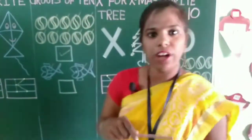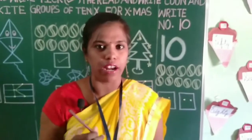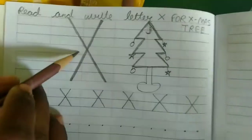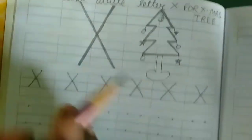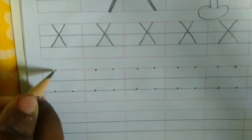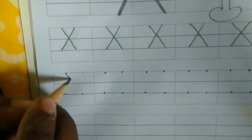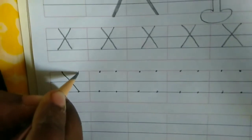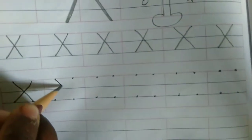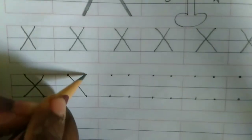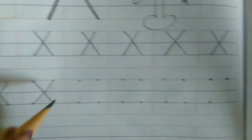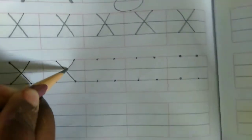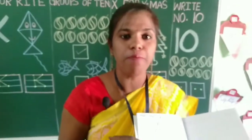Now we will see how to write X in our four-line book. See here — you have to make this format: big X, then xylophone word. How we have to write? Red to blue slanting line, red to blue slanting line, one more time red to blue slanting line. X for xylophone. In this way, you have to complete the full page.